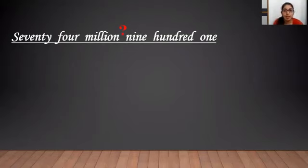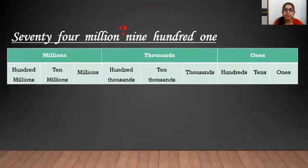Now, let us try placing the digits of this number under the place values. So, 74 under millions period. So, 0, 7, 4. Nothing is there in the thousands period. So, we put zeros.